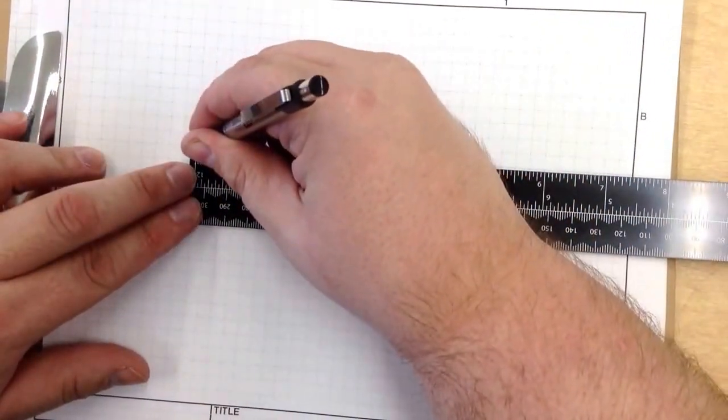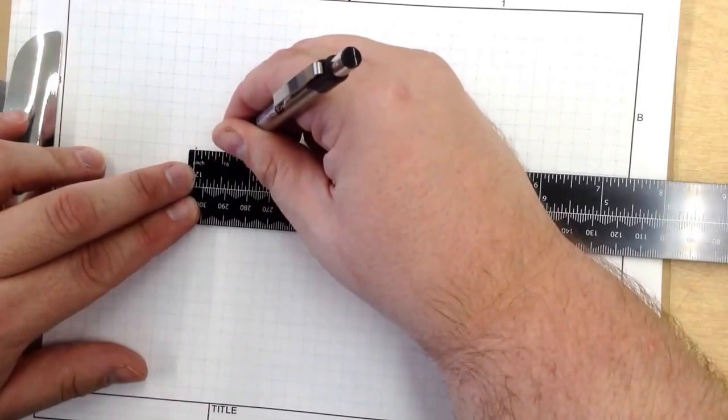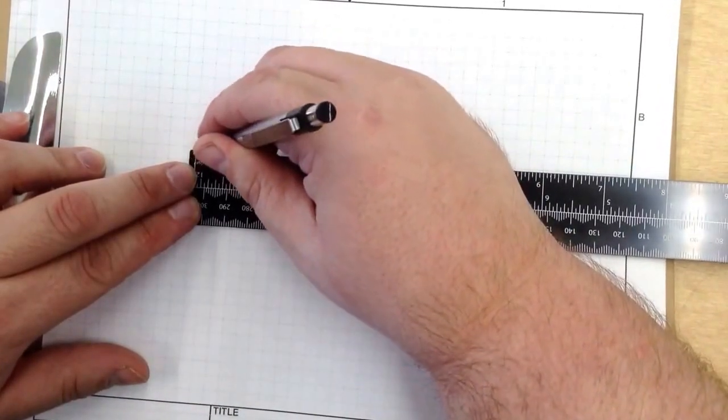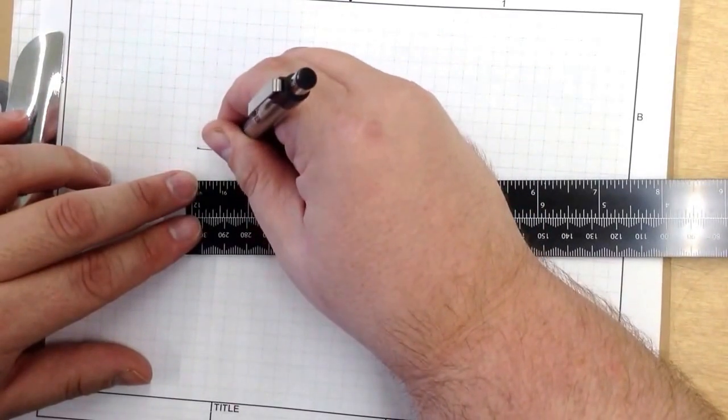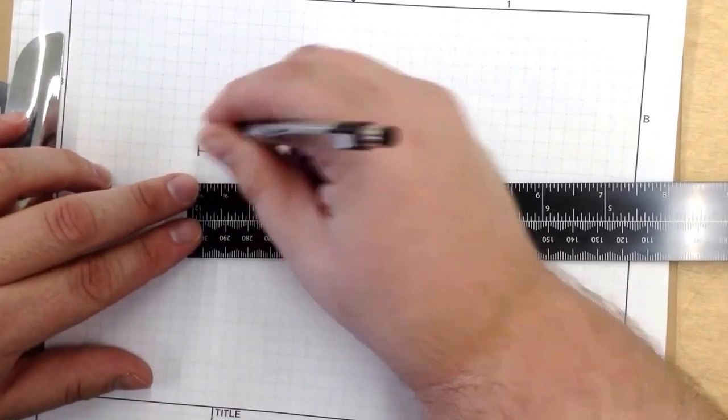Right here is where I'm going to start and I'm going to measure over 5 eighths of an inch. I'm going to connect the line so we know that line is 5 eighths of an inch right there.